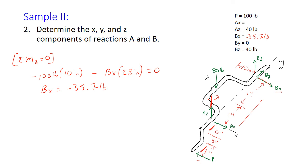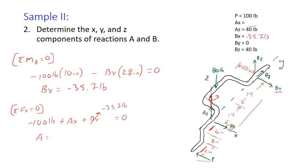Our final unknown is Ax. Summing forces in the x-direction equal to zero: minus 100 pounds from P, plus Ax, plus Bx which is minus 35.7 pounds, equals zero. Solving, Ax equals 135.7 pounds, positive. This solves the problem completely.